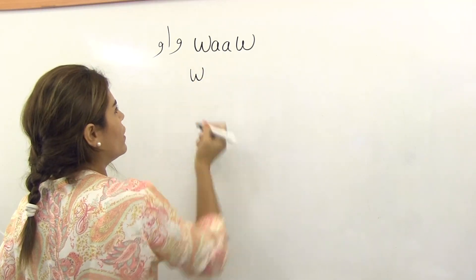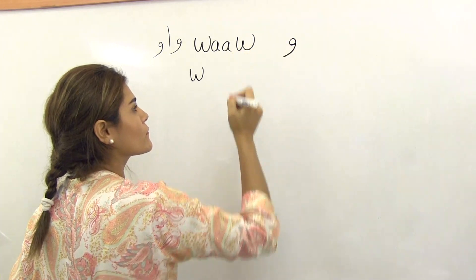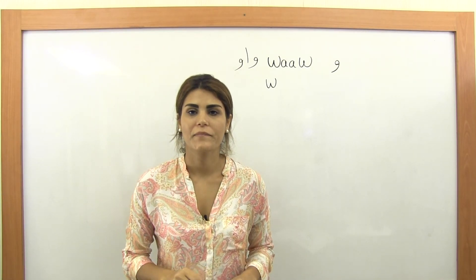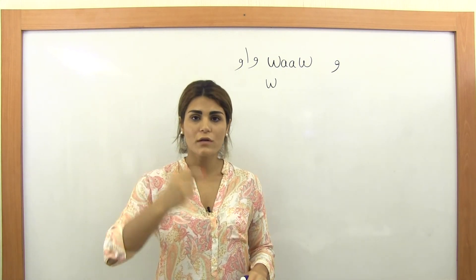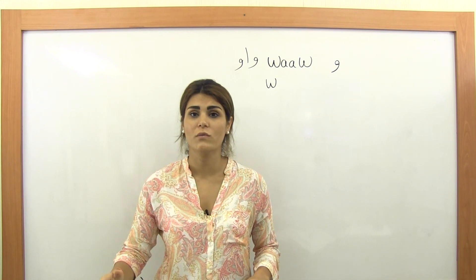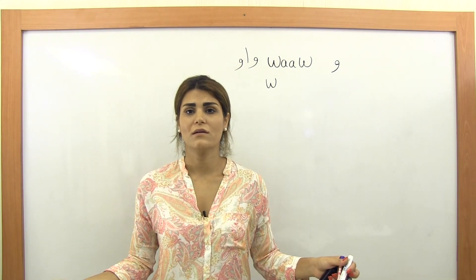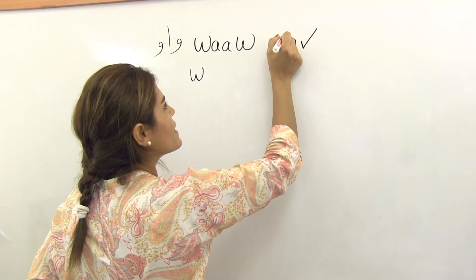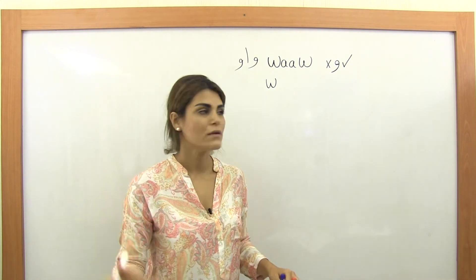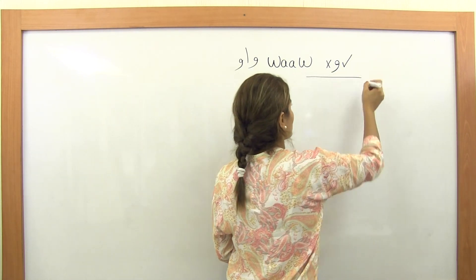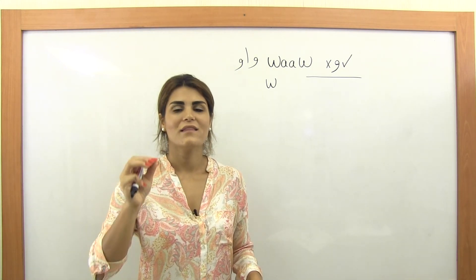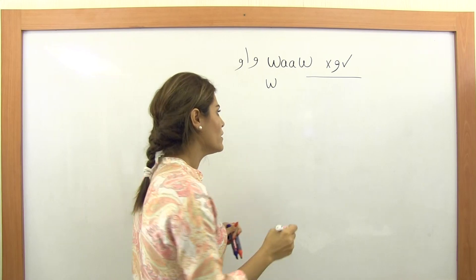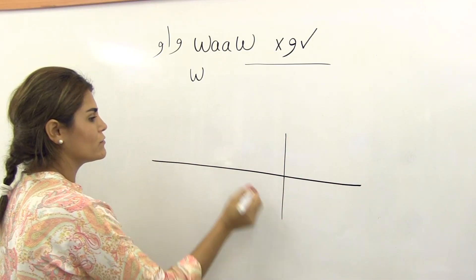Waw looks like a big comma. Same idea as Ya — it doesn't belong to this family but belongs to a different family. We're learning it now because it's commonly used and exists in so many words, giving us more variety. However, this letter connects only from the right — never from the left, ever. When a letter connects only from the right, it has only one shape.